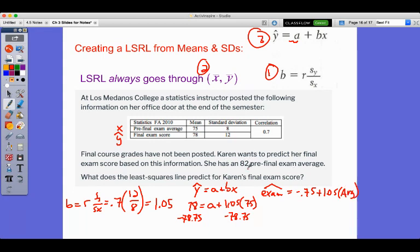And we can use that with her pre-exam average of 82. And we can predict Karen's exam score is predicted to be negative 0.75 plus 1.05 times 82.